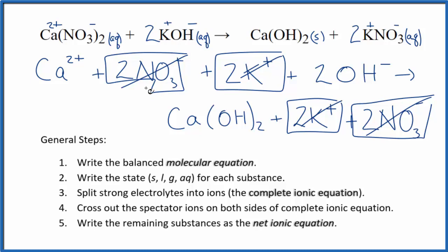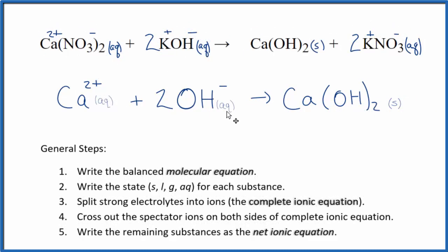I'll clean this up and write the states in. We'll have our net ionic equation. So this is the balanced net ionic equation for calcium nitrate plus potassium hydroxide.